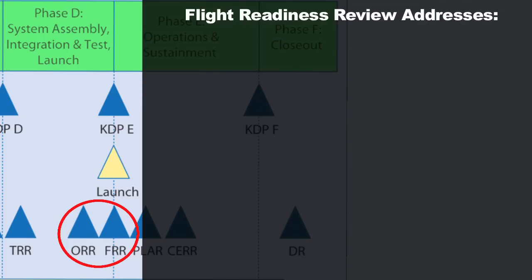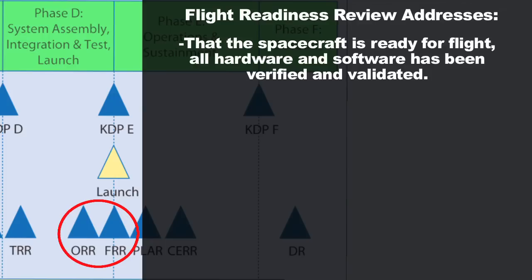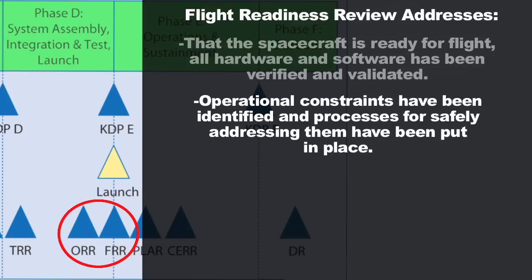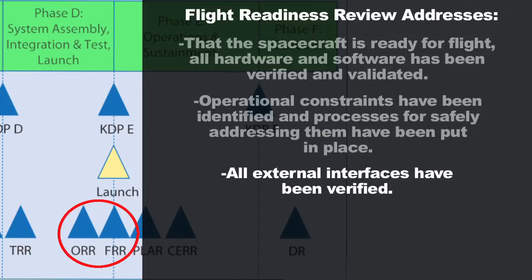The Flight Readiness Review is the second technical review in Phase D and is done very close to launch. The spacecraft is evaluated to ensure it's all ready for flight — all hardware and software have been verified and validated up to the system level, any operational constraints have been identified and documented with a process in place for safely addressing them, and all external interfaces have been verified. This is usually the last major review to give the okay to launch the satellite into operations.